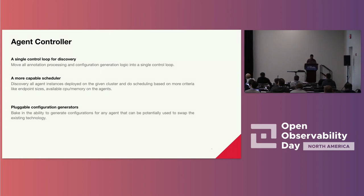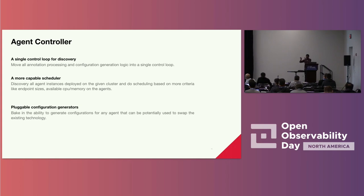So what we did was decouple the discovery process from the agent itself, creating a centralized control loop for discovery that tells workers what to handle. We took the discovery process, put it in a separate control loop, and added intelligence — looking at parameters like CPU and memory. If a certain MetricBeat agent is using too much CPU, take some endpoints from it and redistribute them, making distribution smarter than just hash-mod. We also made configuration generation more pluggable: you define your scrape logic in one language, parse it, and generate configuration for MetricBeat, FileBeat, or even OpenTelemetry Collector.